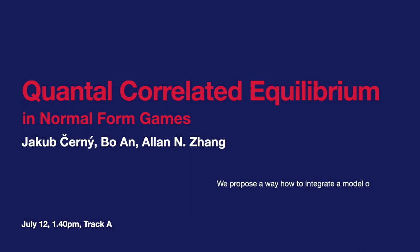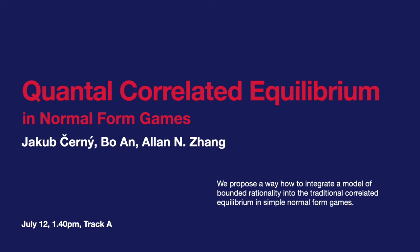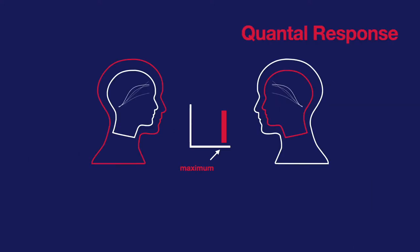We propose a way how to integrate a model of bounded rationality into the traditional correlated equilibrium in simple, normal form games. The subrational model we employ is Quantal Response.